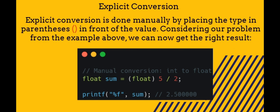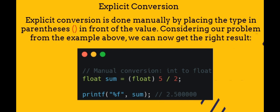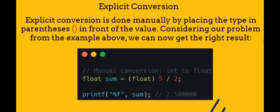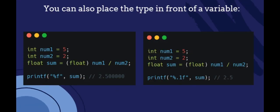Explicit conversion. Explicit conversion is done manually by placing the type in parentheses in front of the value. Considering our problem from the example above, we can now get the right result. You can also place the type in front of a variable, like this example.